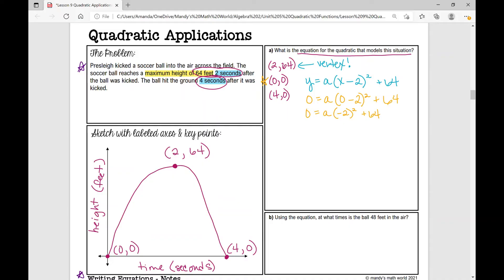I'm going to go ahead and subtract the 64 from both sides right here. So I get negative 64 equals, and then I'm going to also go ahead and do this right here. Negative two squared is four, so four times a. So when looking for the value of a, if I divide both sides by four, I get a equals negative 16.